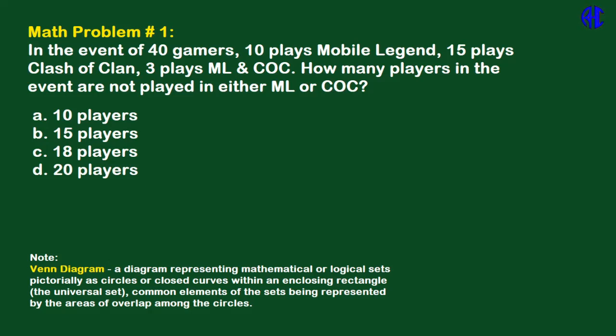For math problem number one: in an event of 40 gamers, 10 play Mobile Legends, 15 play Clash of Clans, and 3 play both ML and CoC. How many players in the event are not playing either ML or CoC? Letter A: 10 players, Letter B: 15 players, Letter C: 18 players, Letter D: 20 players.